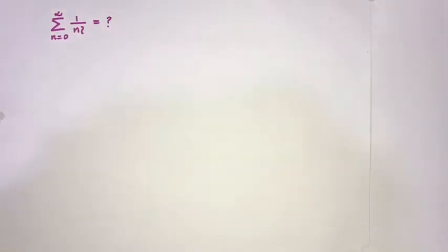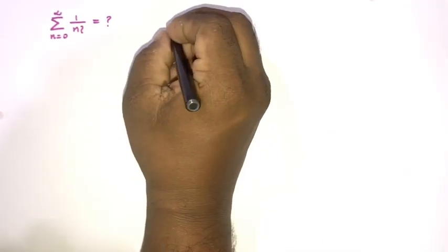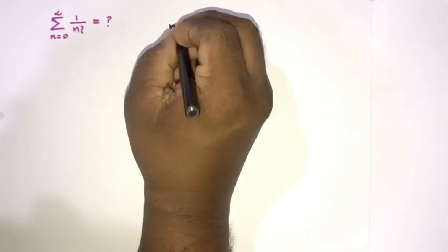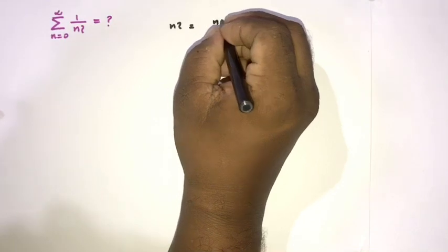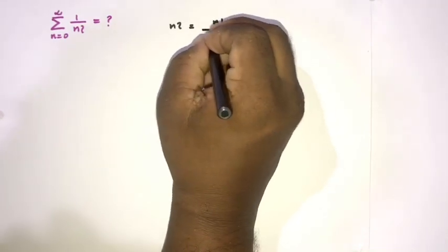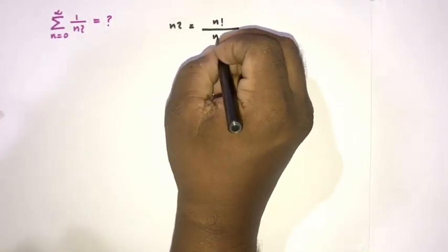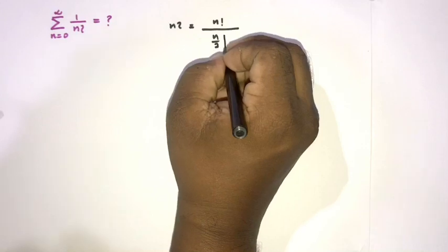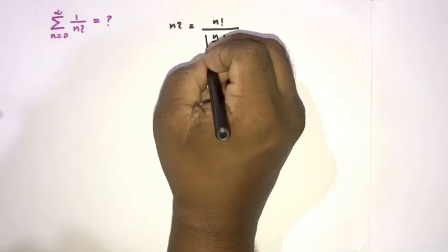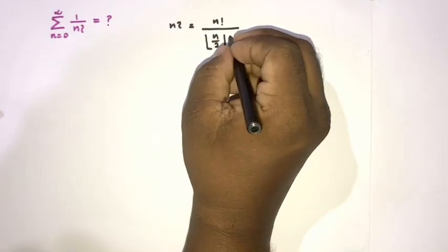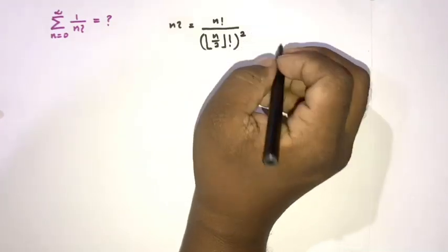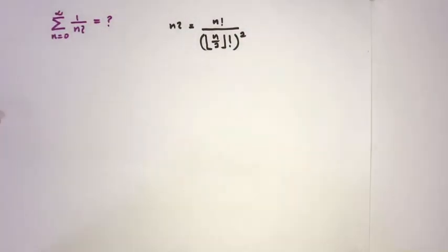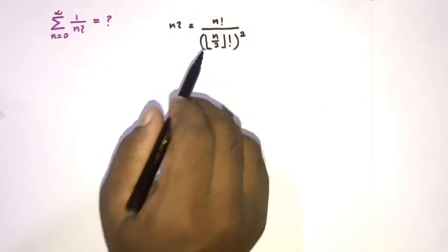What is the swinging factorial? This is the definition of swinging factorial: it is equal to n factorial over the floor of n over 2, and floor of n over 2 factorial, squared. This is the definition of swinging factorial.